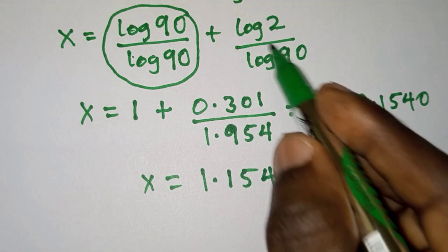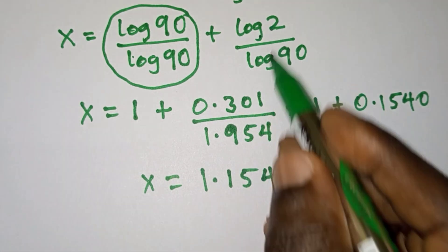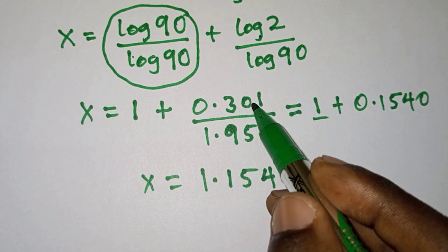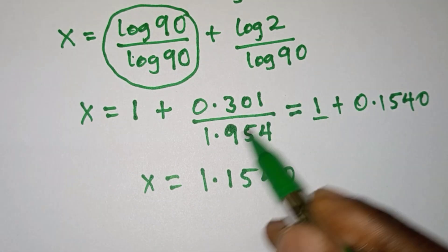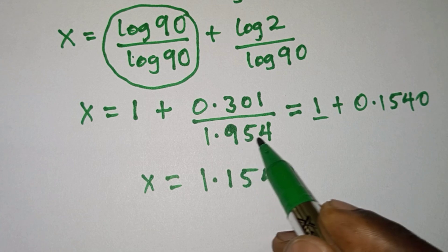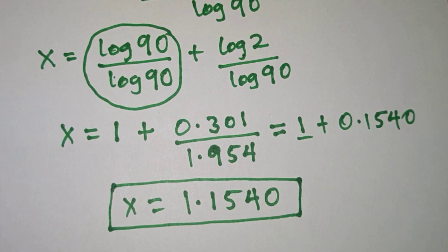Remember that these values are approximated values, not exact values. The value we got from log 2 is an approximated value, likewise log 90 which is 1.954 is also an approximated value. Keep that in mind. Subscribe to my channel for more videos. Thanks for watching, have a nice day, see you again on the next video — take care, bye.